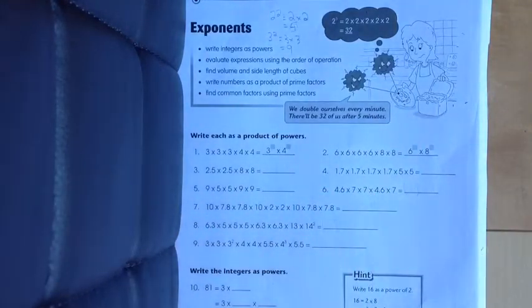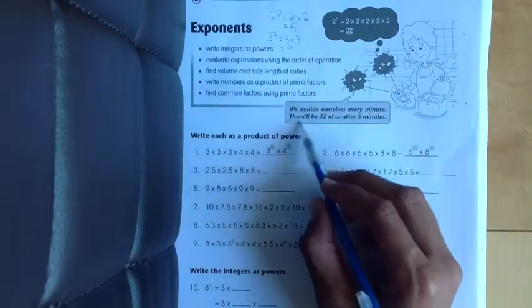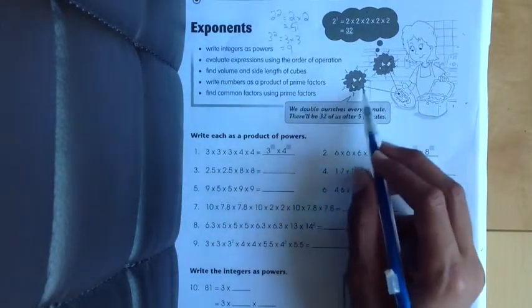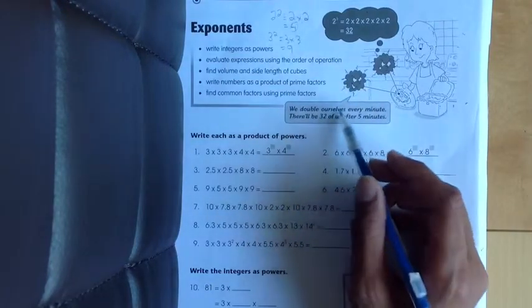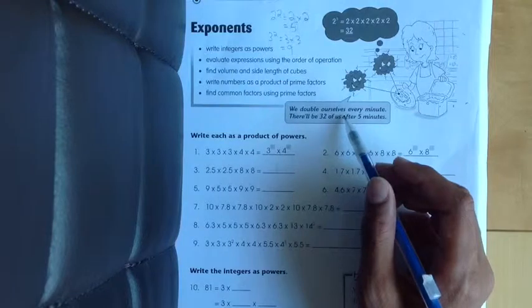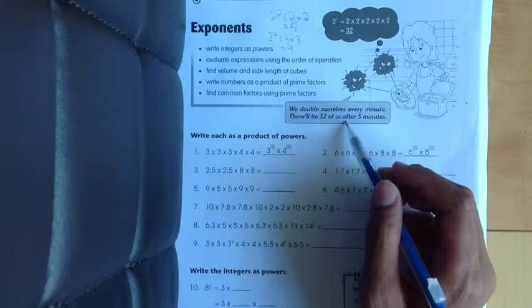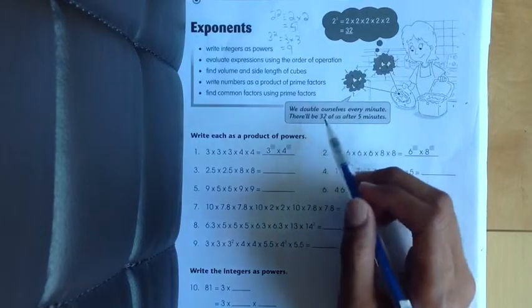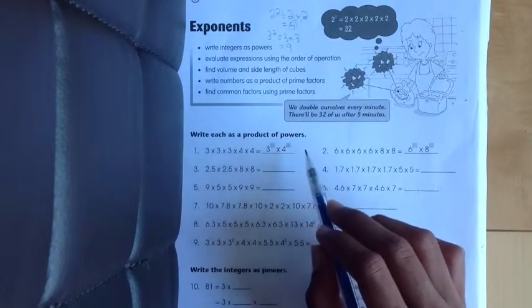Let's start question number 1. Here's a funny little example right here. These are germs on this plate that someone just ate from. We double ourselves every minute. There will be 32 of us after 5 minutes. Write each as a product of powers.